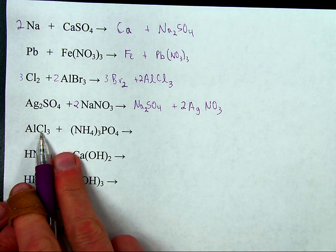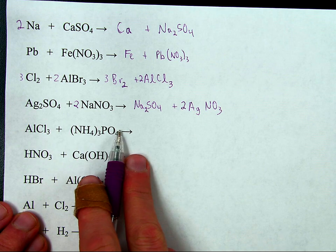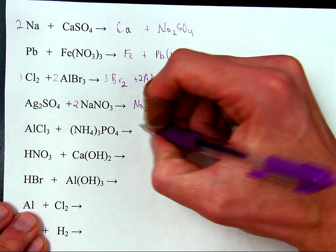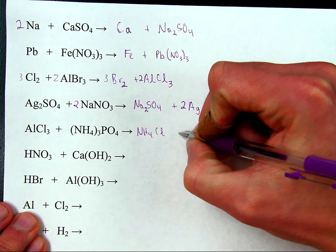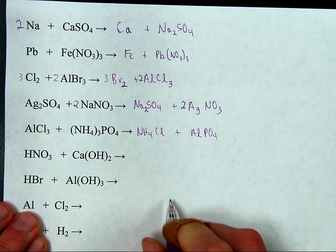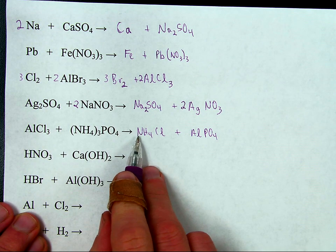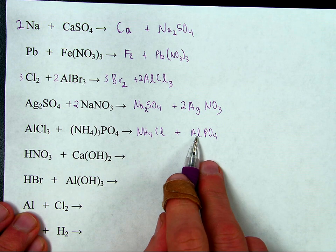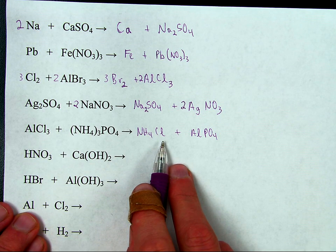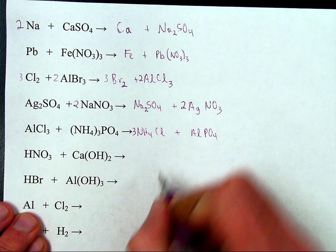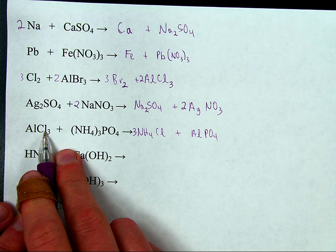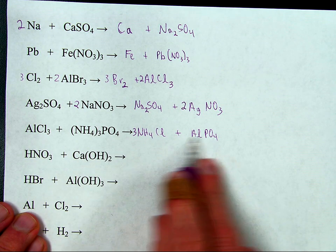Next: aluminum chloride and ammonium phosphate. The positive thing switches places with the positive thing — aluminum takes ammonium's place, ammonium takes chlorine's place. So ammonium is now paired with chlorine, and aluminum is now paired with phosphate. Step two: fix formulas. NH4 is a plus one, Cl is a minus one — this is fine. Aluminum is a plus three, phosphate is a minus three — this is fine. Balancing: three ammoniums require three ammoniums, giving three chlorines — there are three chlorines. One aluminum, one aluminum. One phosphate, one phosphate. Done.